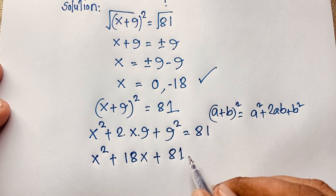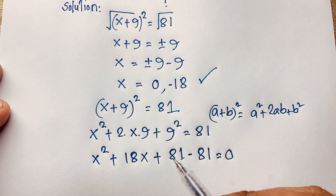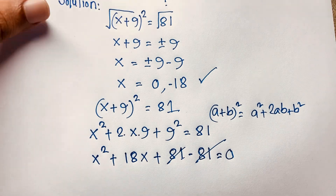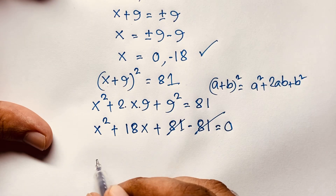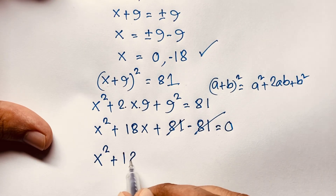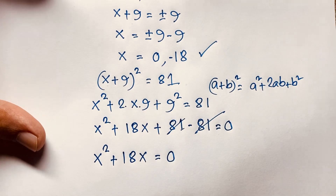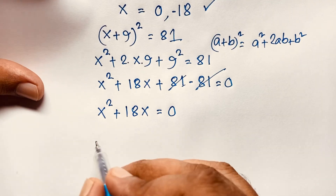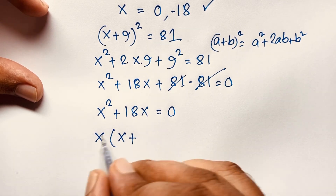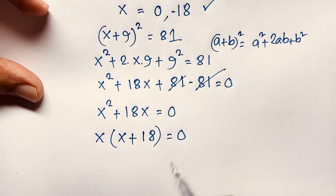If I move 81 to this side, it will be negative 81, equal to 0. Now 81 and 81 cancel out. We find x² + 18x = 0. You can see that x is common, so if I take x as common it gives x(x + 18) = 0.